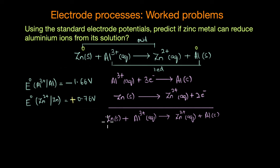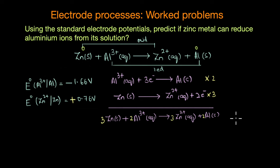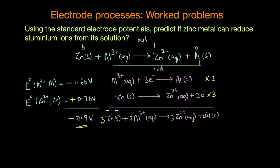To balance electrons, we multiply the first half reaction by two and the second by three, giving the balanced overall reaction: 3Zn(s) + 2Al³⁺ → 3Zn²⁺ + 2Al(s). Adding the electrode potentials gives E°cell = −1.66 + 0.76 = −0.9 V. This negative value indicates the reaction is not feasible under standard conditions and is thermodynamically non-spontaneous, which is why in practice we do not observe zinc metal reducing aluminium ions from solution.